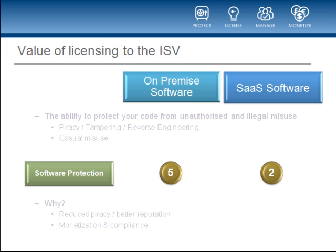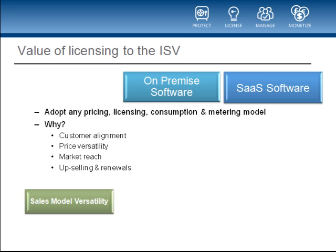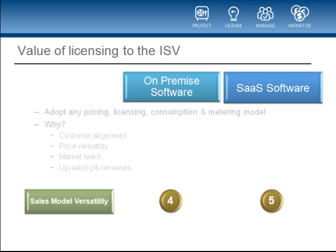On balance, it appears that in the SaaS world, with some exceptions, code protection becomes less of an issue. The fourth point is that with an effective licensing system, the software vendor is free to be much more versatile in their sales model, allowing them to adopt any pricing, licensing, consumption and metering approach to measuring and extracting value. This enables the ISV to better align with customer requirements, take advantage of changing market conditions and extend their reach further into new customers and new markets. In the cloud, having a versatile commercial model is a prerequisite — you can't offer a SaaS application and then force an expensive front-loaded seats-and-servers price plan on your customer. You need to offer choice, with options for pay-as-you-go and pay-on-demand that can link entitlement and billing to software usage.